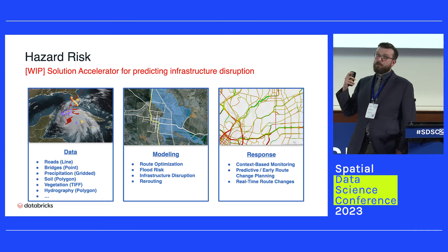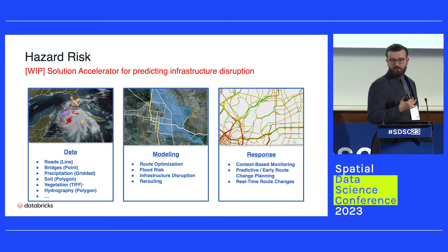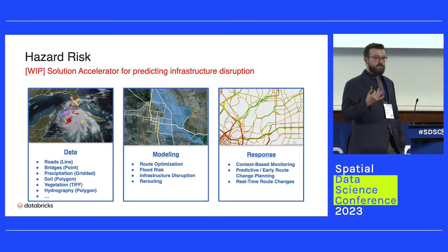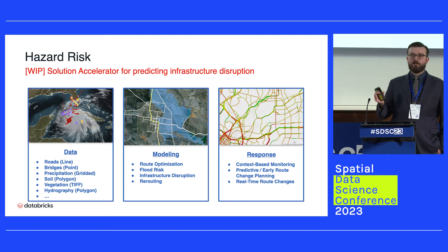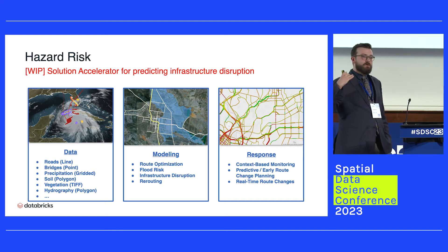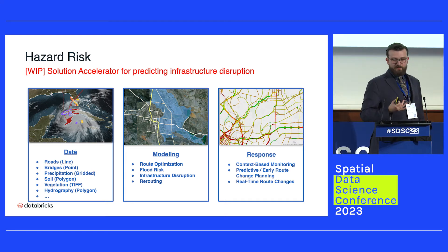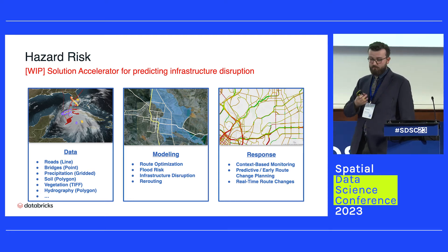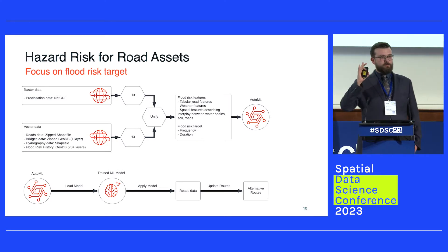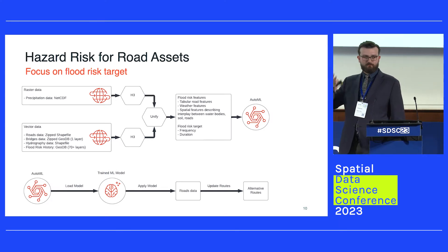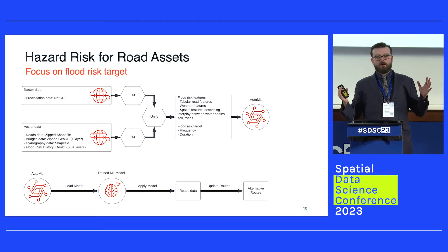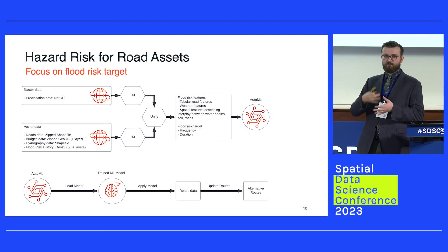That might be raster data coming in as climate variables — precipitation, sun exposure, soil information, et cetera — and then the physical assets. In this case, we're going to focus on the risk of flooding for roads. Our approach is to get all of our raster layers and find a way to get them into H3, and do the same for the vector data. Now when we have both raster and vector in the same domain, that domain itself is the unification.